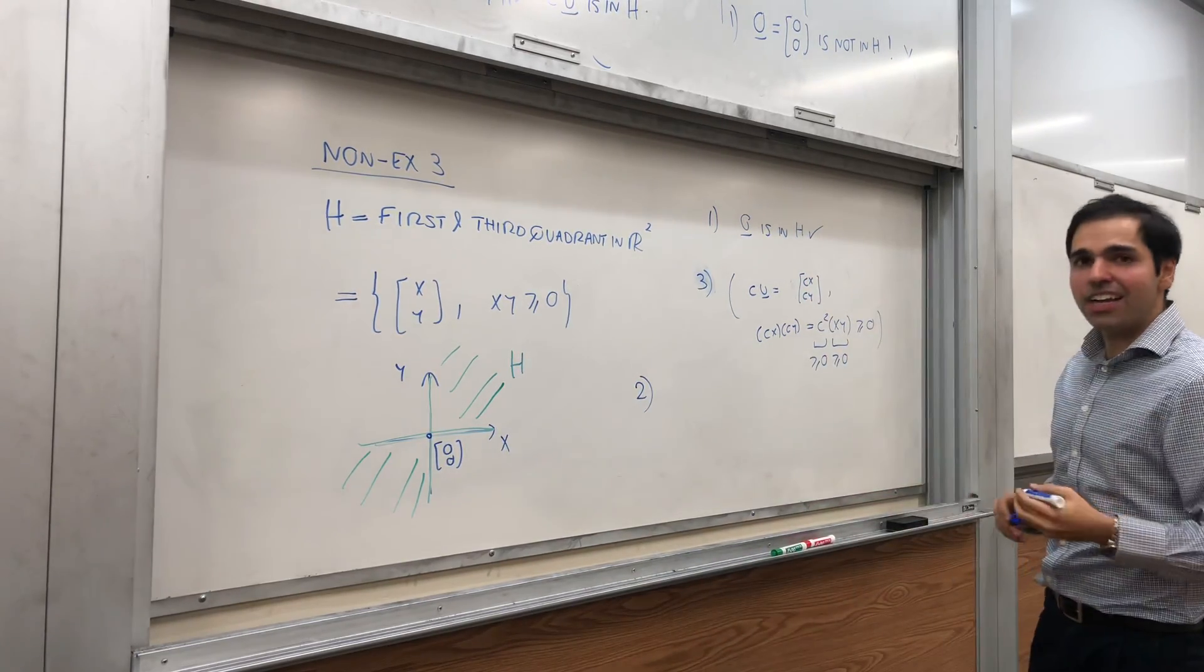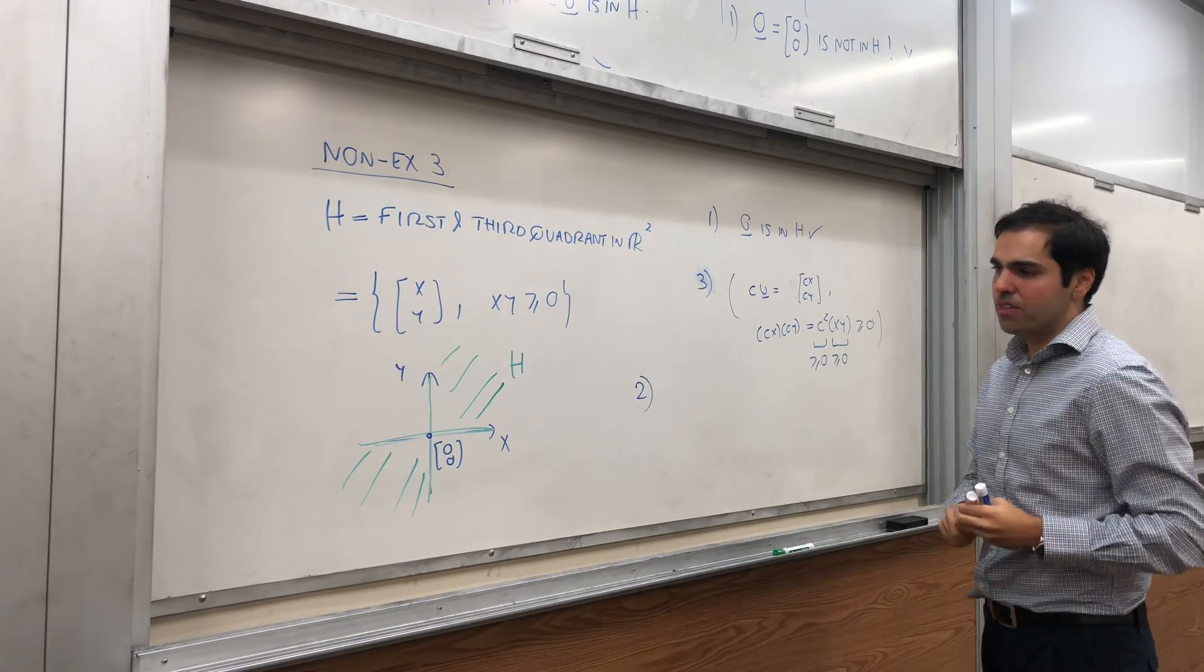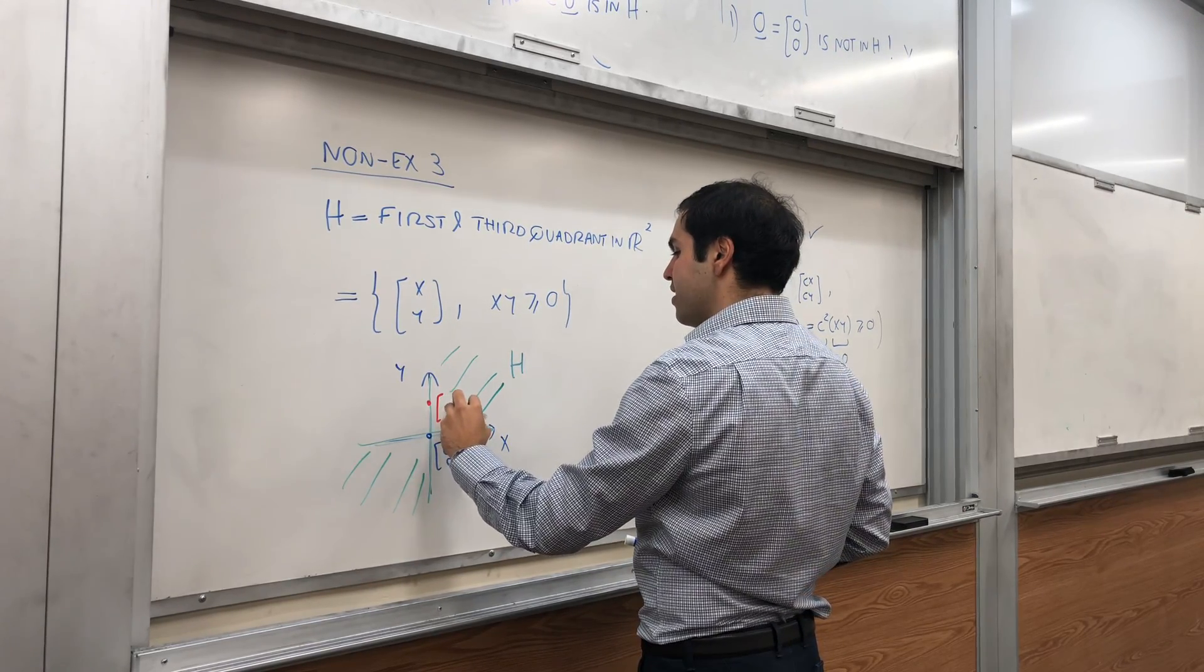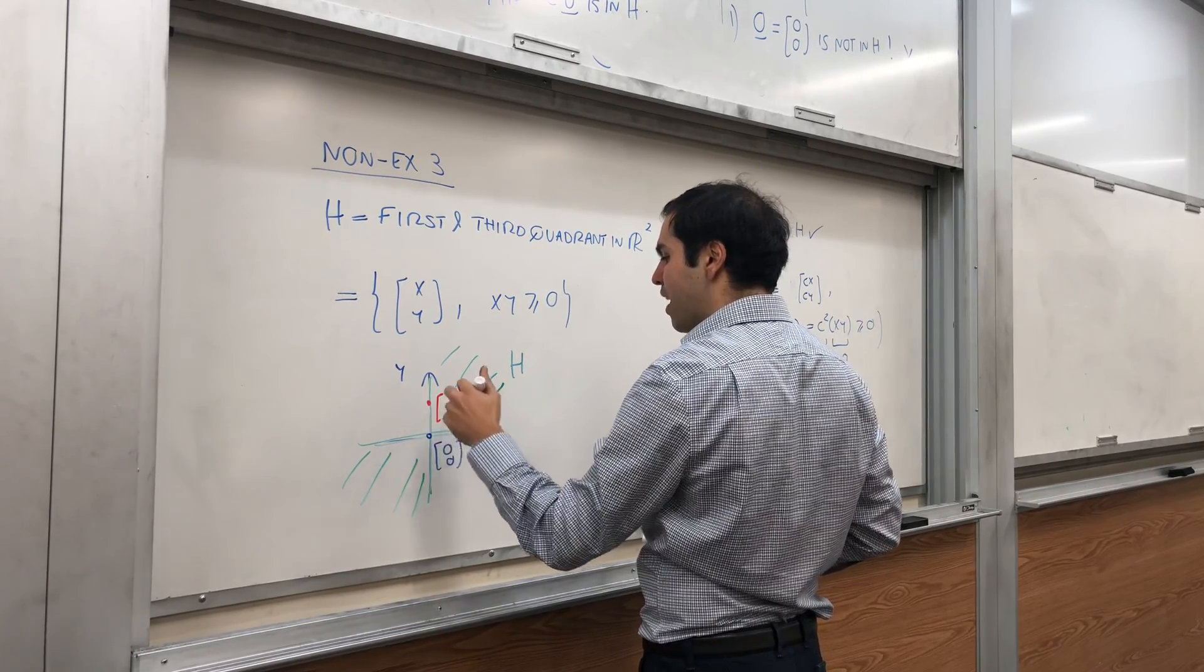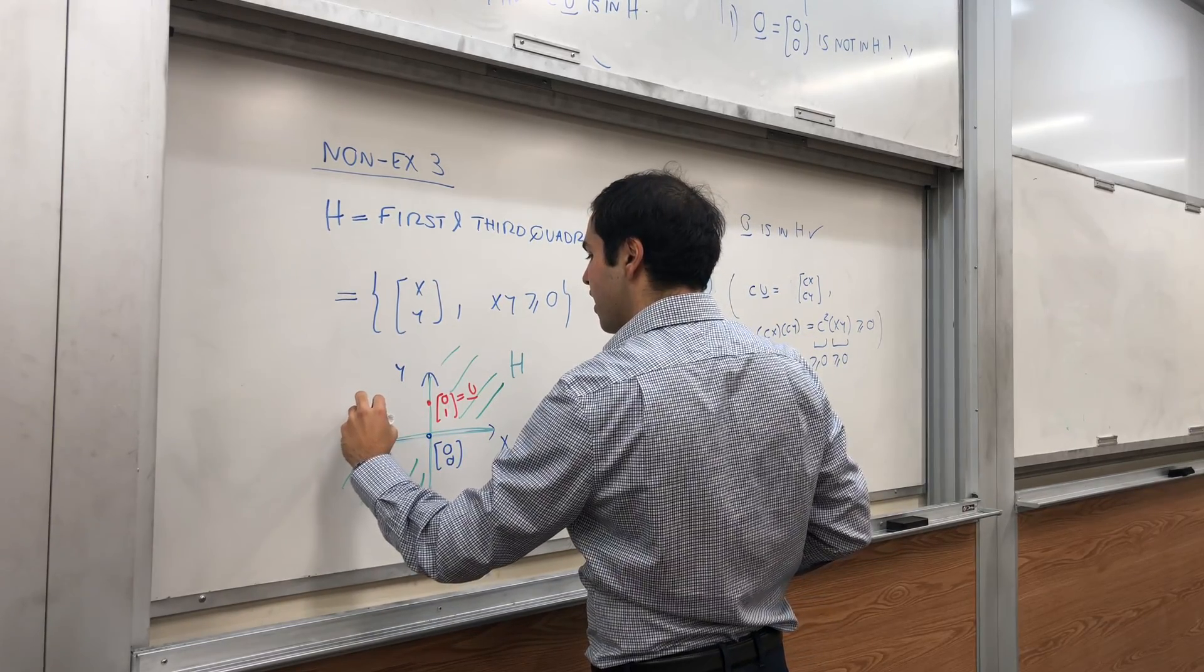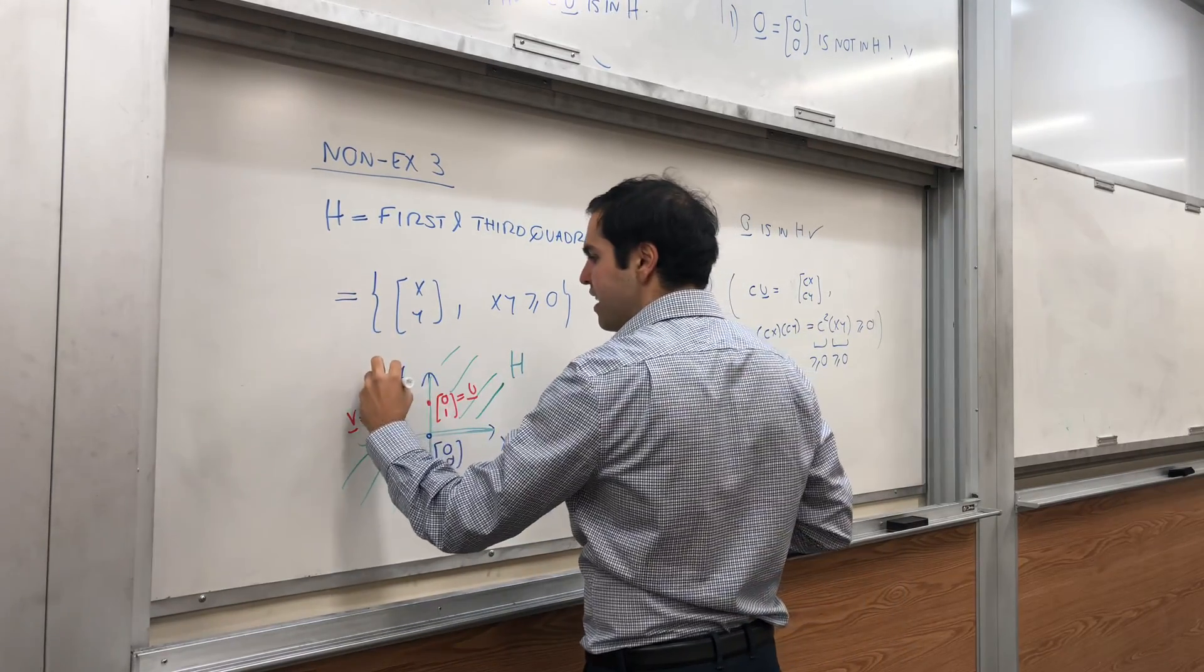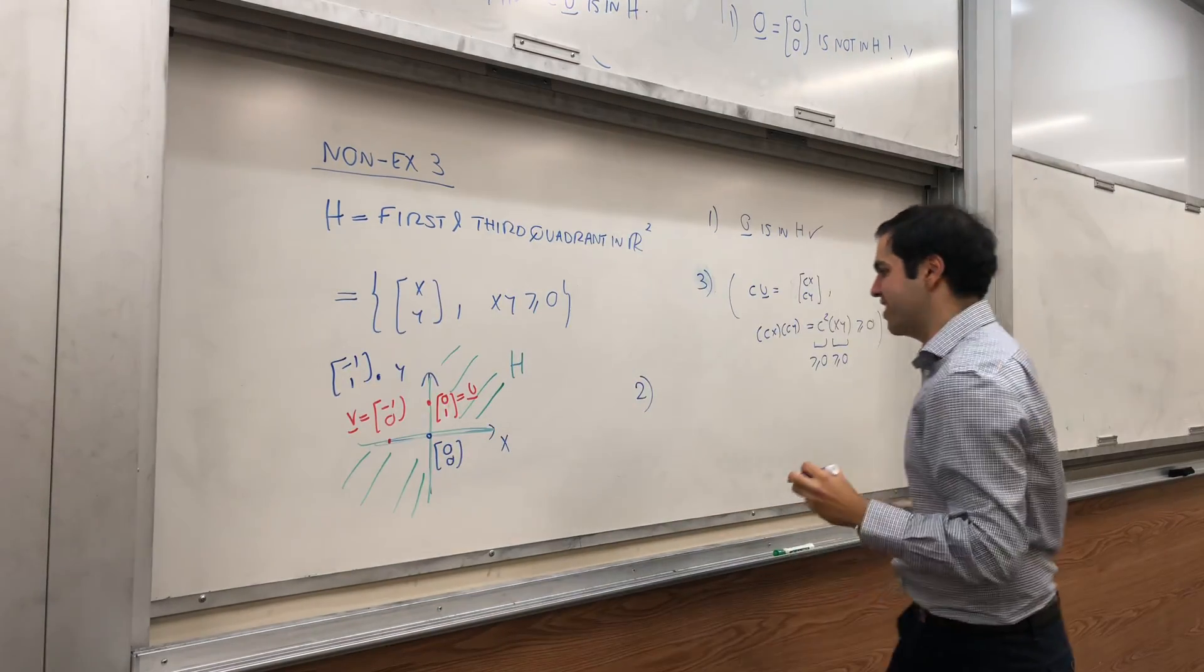But now, let's check whether or not it's closed under addition, and it turns out no, because you can, for example, take points on the axis, let's say (0, 1), sorry, I was reading from down to up, so (0, 1), which is u, and v being, let's say, (-1, 0). Well, the sum becomes (-1, 1), which is not in H anymore.